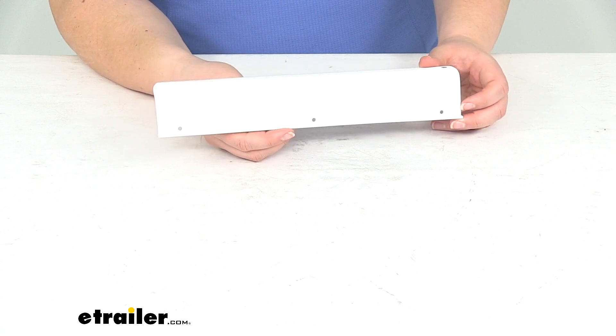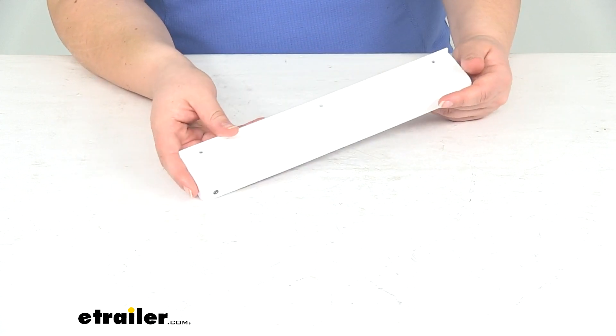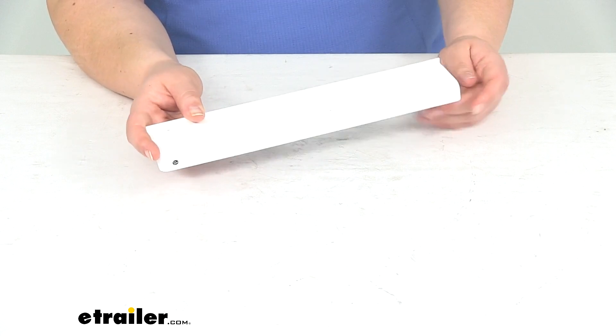It does have three mounting holes. It does not come with any hardware to attach this. You will provide that on your own or reuse it from your old stopper or handle on your RV screen door.